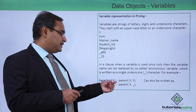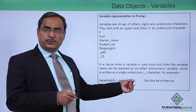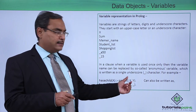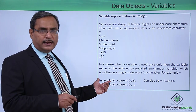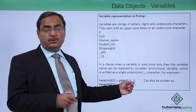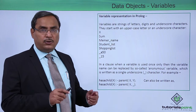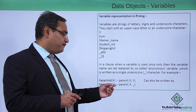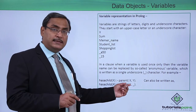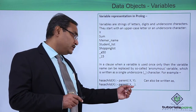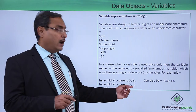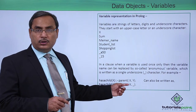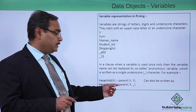For example: `has_child(X) :- parent(X, Y)`. The variable Y appears only once on the right-hand side and has no presence on the left-hand side. In that case, we can write `has_child(X) :- parent(X, _)`, where the anonymous variable is represented by an underscore. This Prolog clause can be represented using this form.